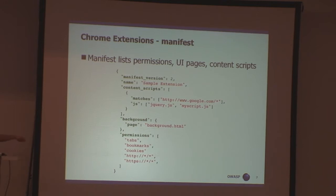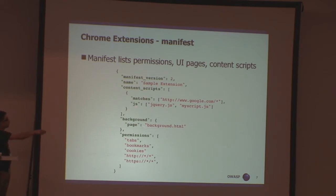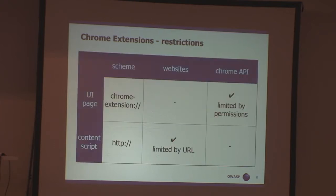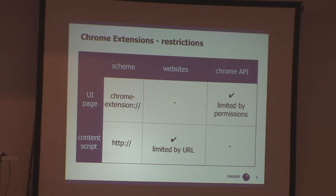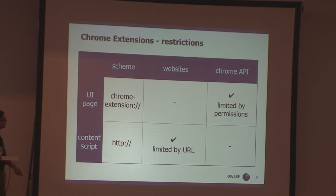The manifest file also specifies the origins the extension is allowed to modify, the background page URL, and for all Google-visited websites there will be two scripts embedded by the Chrome browser. This is manifest version 2, which is the current version. To summarize: UI pages run in a Chrome extension origin — a highly privileged origin — with access to the Chrome API. But they are limited by permissions declared in the manifest and don't get access to the DOM of the website. Content scripts run in HTTP, get access to the DOM limited by URLs specified in the manifest, but don't get access to the Chrome API.